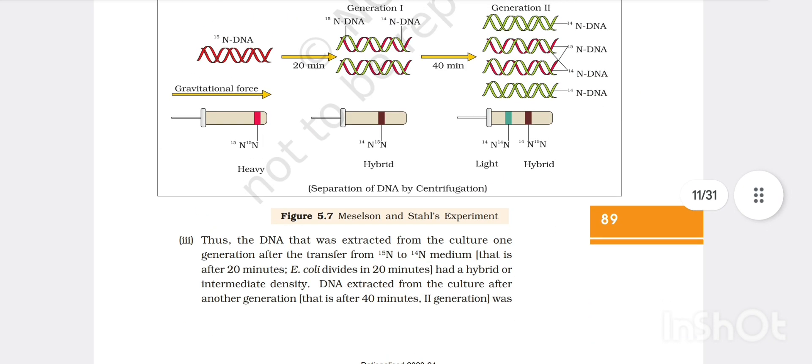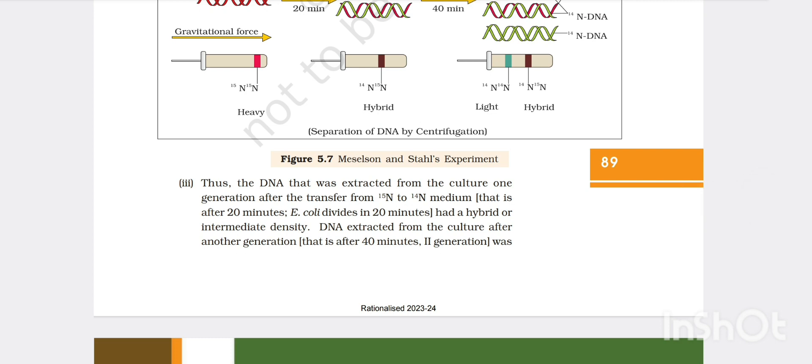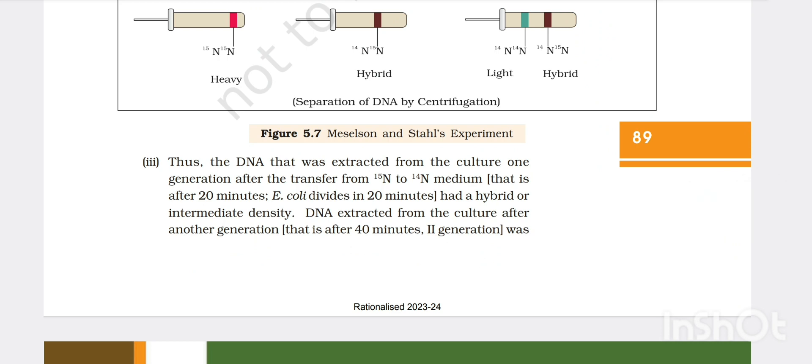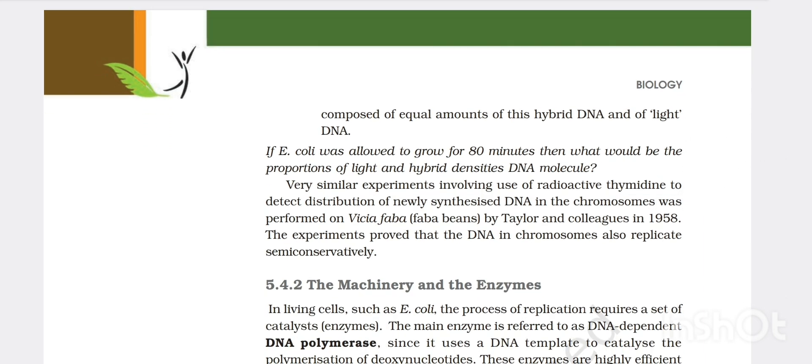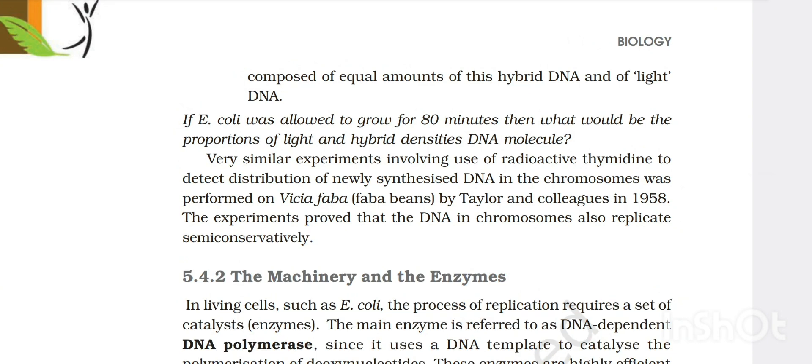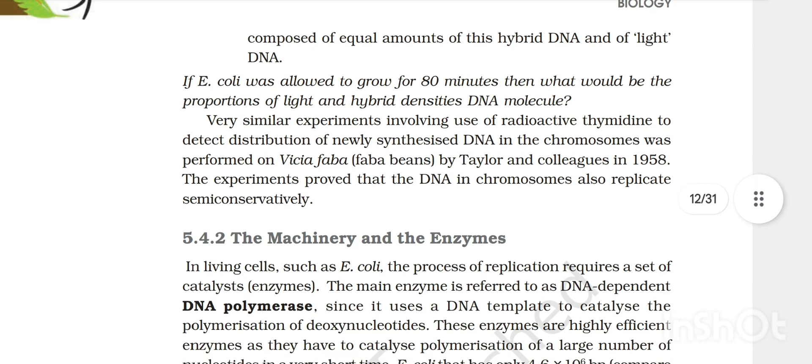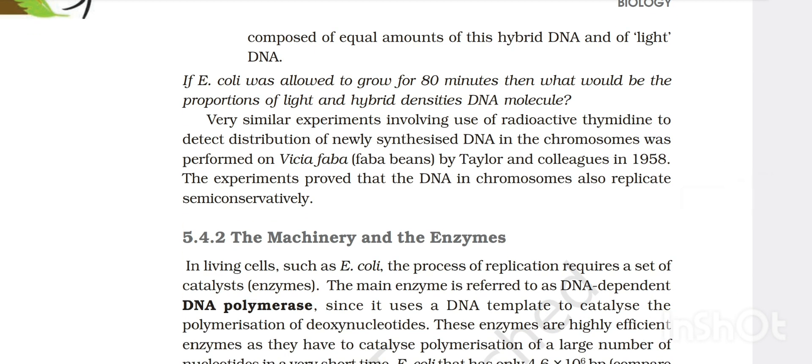The DNA extracted from the culture one generation after the transfer from N15 to N14 medium, that is after 20 minutes because E. coli divides in 20 minutes, had a hybrid or intermediate density. DNA extracted from culture after another generation was composed of equal amount of this hybrid DNA and of light DNA. If E. coli was allowed to grow for 80 minutes, what would be the proportion of light and hybrid densities DNA molecule? Very similar experiments involved use of radioactive thymine to detect distribution of newly synthesized DNA in the chromosome was performed by Taylor and colleagues in 1958.